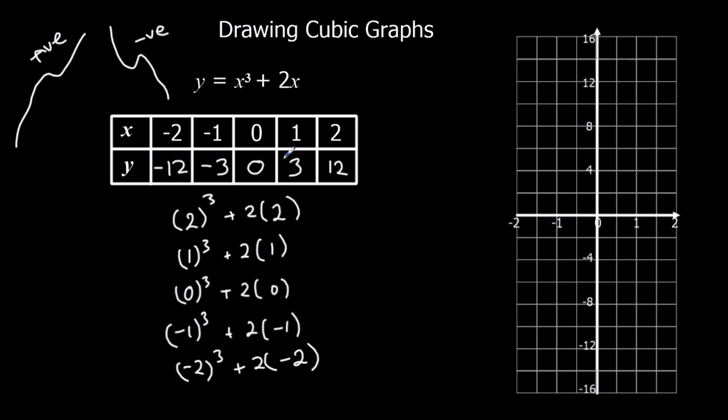So then we've got our coordinates. And all we've got to do is plot them onto the graph. So 2, 12, 1, 3, 0, 0, minus 1, minus 3, and minus 2, minus 12. So we've got a curved graph again. It's going to kind of loop around and go back up.